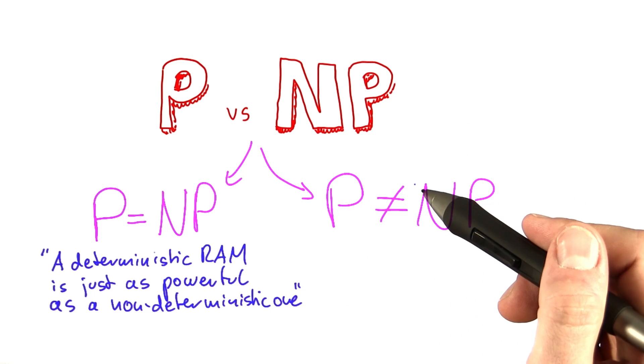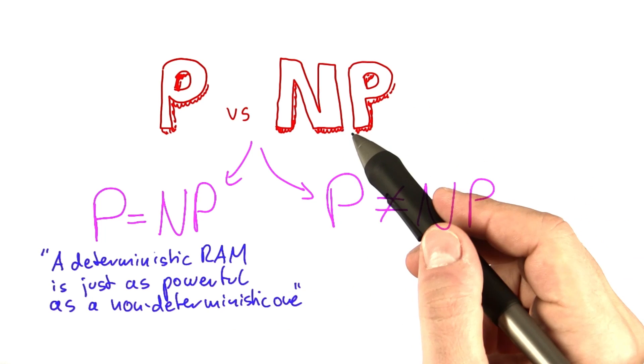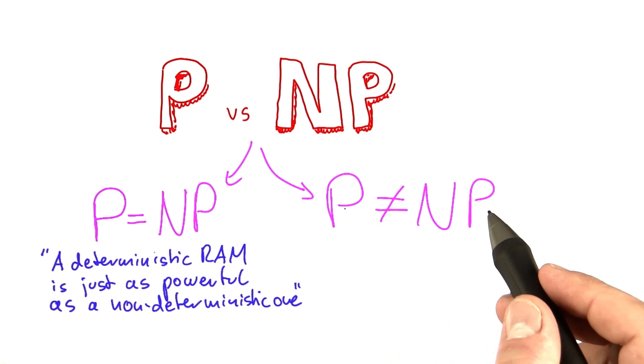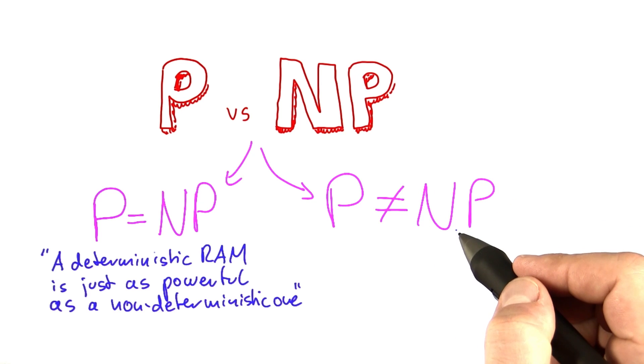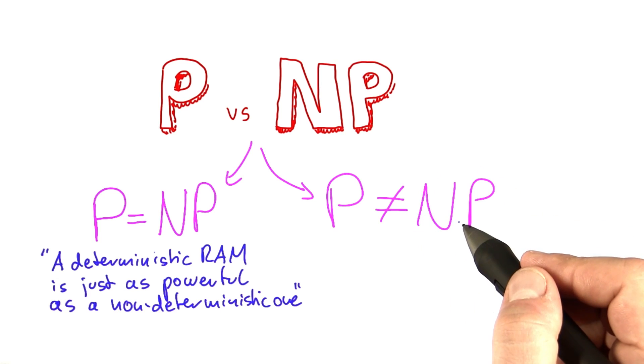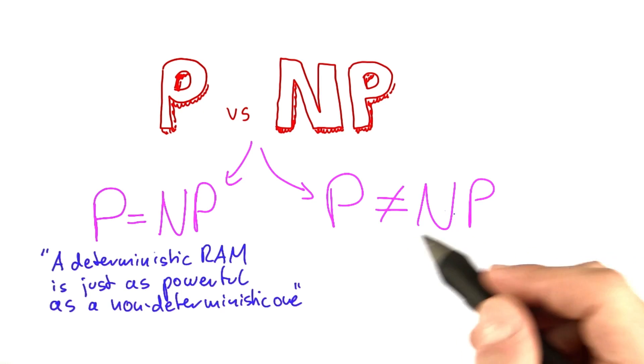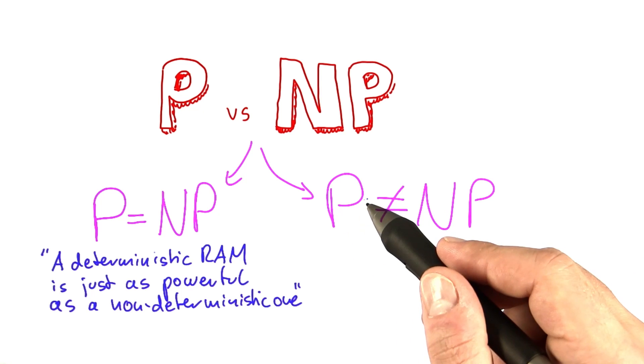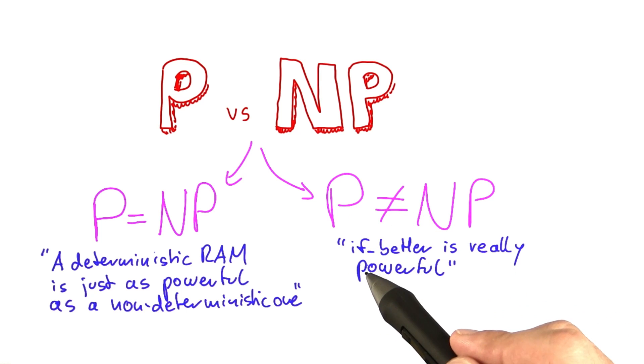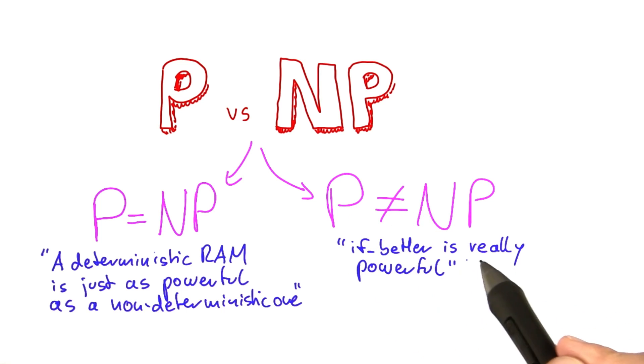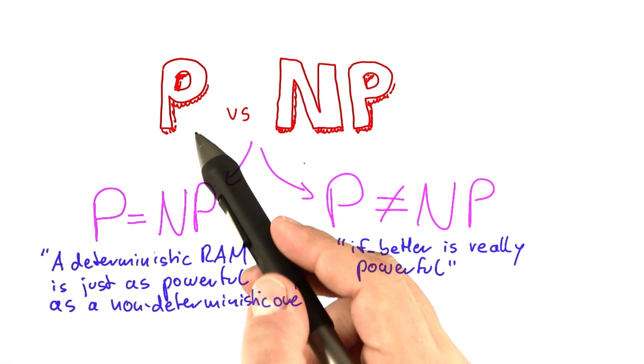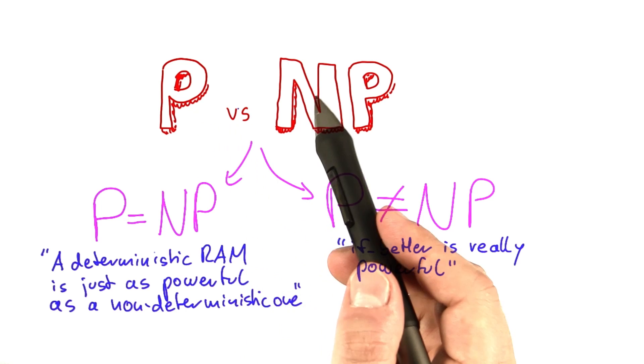Or there could be the other case: no NP-complete problem can be solved in polynomial time, so P does not equal NP. There are certain problems that you can solve in polynomial time if you have the if-better function available, but you cannot solve them in polynomial time if you don't have this function. Basically, saying P does not equal NP is the same as saying that the if-better function is really powerful. So which one is it? That question is the famous P versus NP problem.